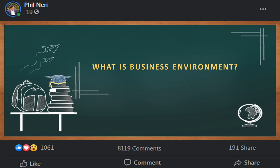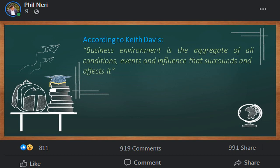Business environment refers to those aspects of the surroundings of a business enterprise which affect or influence its operations and determine its effectiveness. Business environment may be defined as the total surroundings which have a direct or indirect bearing on the functioning of business. According to Keith Davis, business environment is the aggregate of all conditions, events, and influences that surround and affect it.